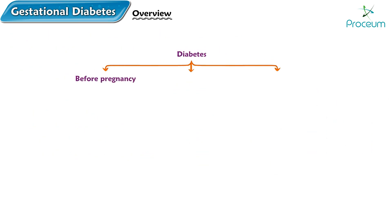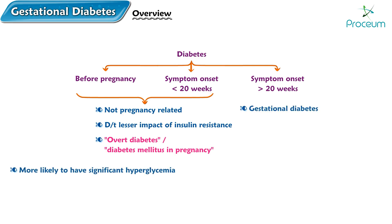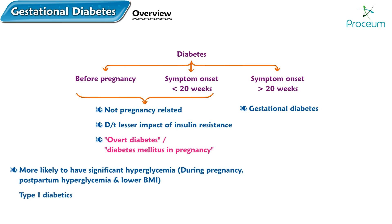Diabetes that exists before pregnancy or with symptom onset before 20 weeks is typically not pregnancy-related due to the lesser impact of insulin resistance in the early stages of gestation. This is defined as overt diabetes or diabetes mellitus in pregnancy. Patients with overt diabetes are more likely than patients with gestational diabetes to have significant hyperglycemia during pregnancy and postpartum hyperglycemia, as well as a lower body mass index, because they may be type 1 diabetics who are less likely to be overweight or obese.